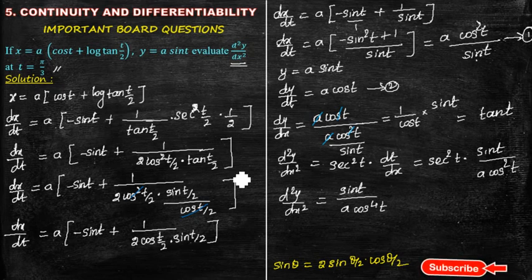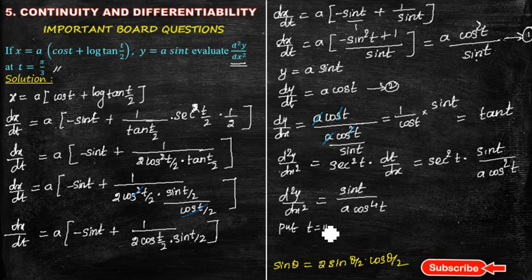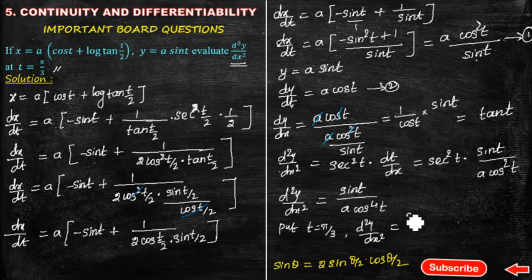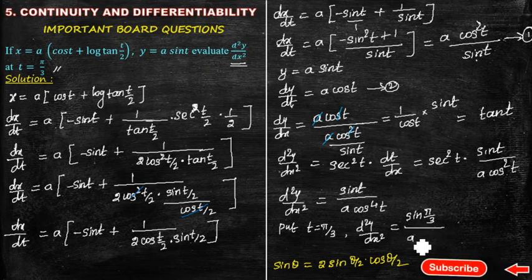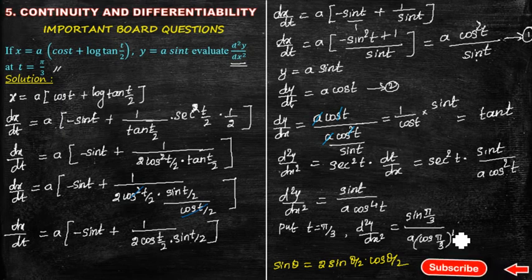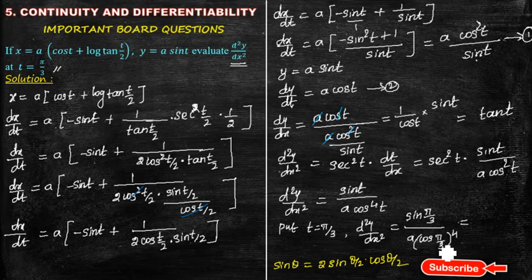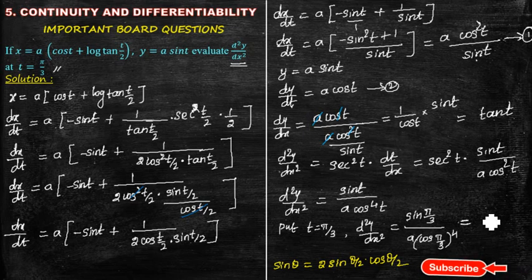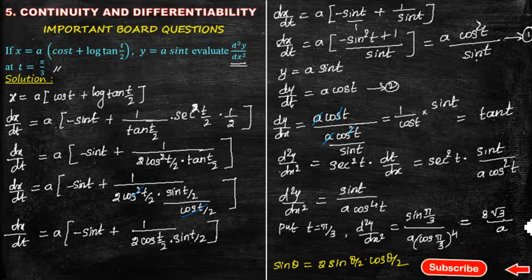At t equal to π/3, substituting: d²y/dx² equals sin(π/3) divided by [a·cos⁴(π/3)]. sin(π/3) equals √3/2, and cos(π/3) equals 1/2, so cos⁴(π/3) equals (1/2)⁴. Simplifying, we get 8√3 divided by a. The final answer is 8√3/a.